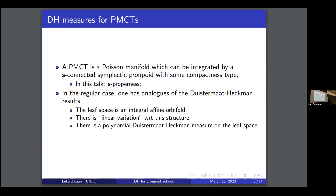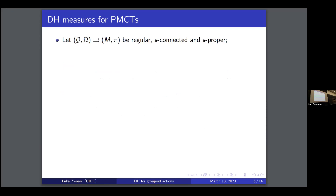There is a polynomial Duistermaat-Heckman measure on the leaf space. Let me explain this in some detail. We fix a regular source-connected, source-proper symplectic groupoid. The first thing you get is an affine measure on the leaf space, which comes directly from the integral affine structure.